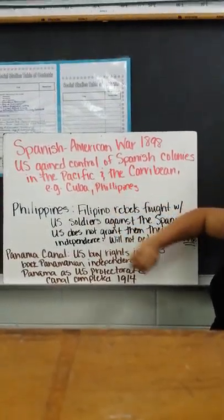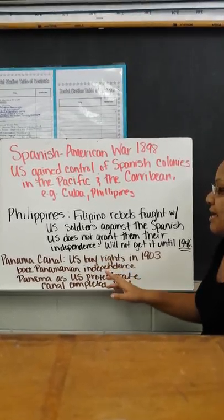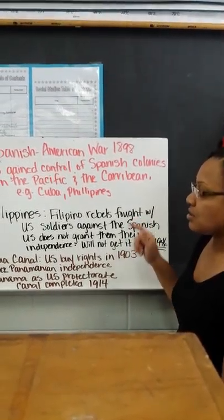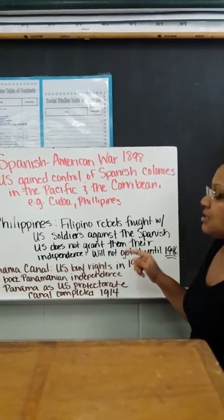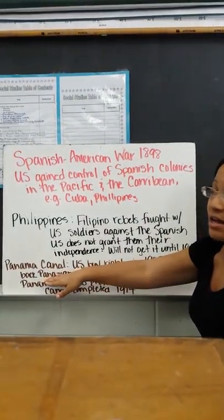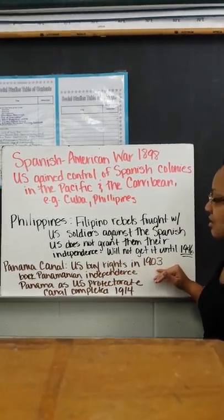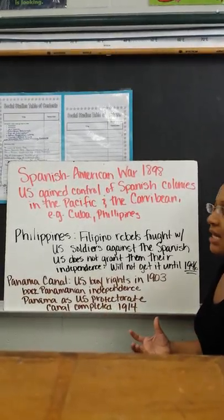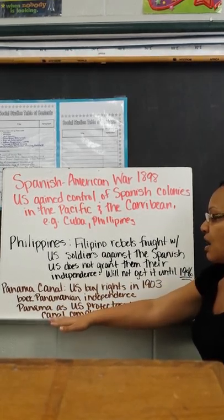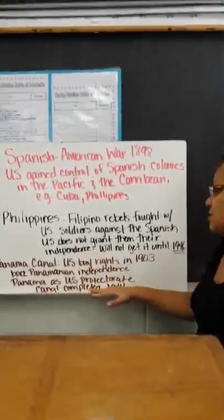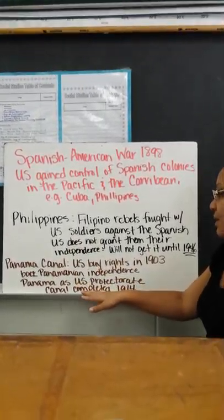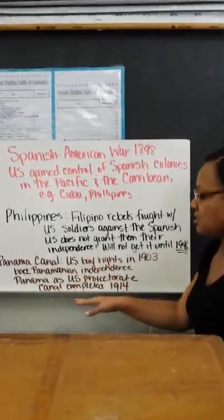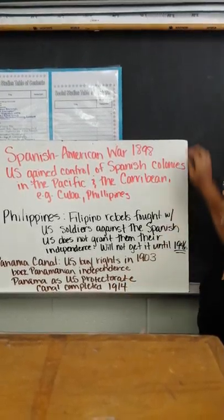Looking at the Panama Canal, which is in Central America — it is a quicker trip because instead of sailing all the way around South America to get to the other side, you can just cut through the Panama Canal. It's a very valuable piece. The U.S. bought rights in 1903. We also backed Panamanian independence, and Panama became our protectorate — we would protect the country from any other country trying to take it over. We didn't take it over ourselves because we already had the canal. We let them become independent and protected them so no other country would bother them. The Panama Canal was completed in 1914.